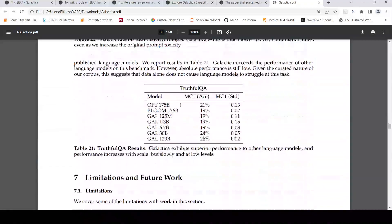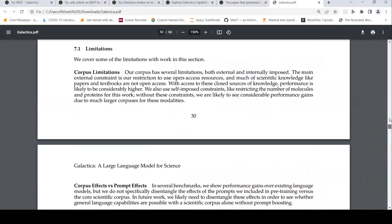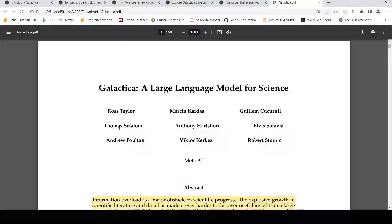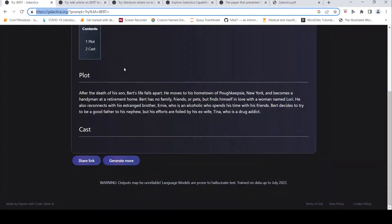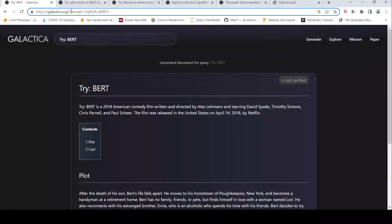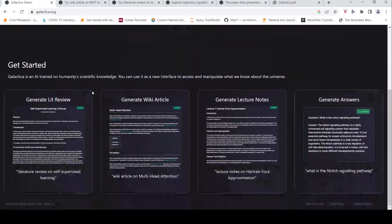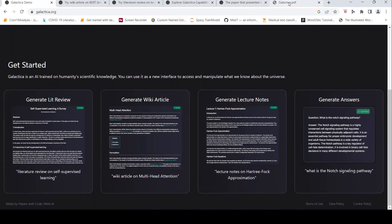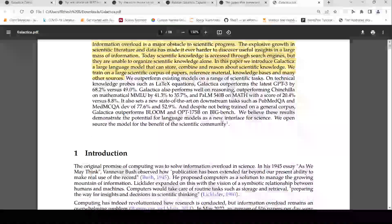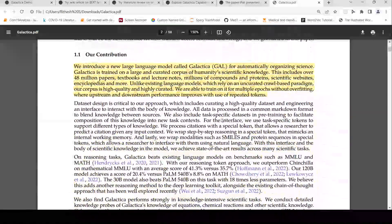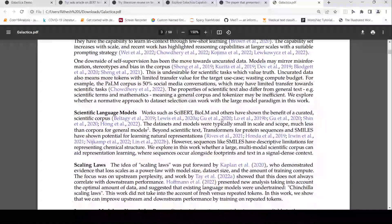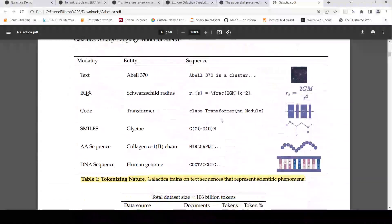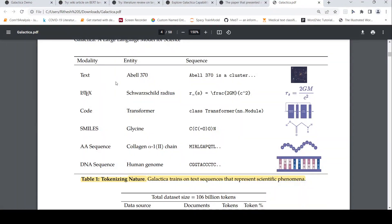So these were some of the various other things which you can perform with this particular model, other than what we have seen over here in terms of literature survey, or wiki article, or generate lecture notes, generate question answering. Other than that, it can also do many of these tasks. Let's quickly look into, not going too much into details, but let's look into some kind of what is their tokenization over here.